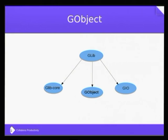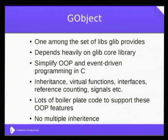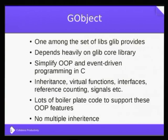GObject provides inheritance, virtual functions, interfaces, reference counting, signals, and all the kinds of stuff that you can imagine a modern programming language providing. The negative side is that you have to use a lot of boilerplate code to support these OOP features. Widgets written using GObject classes have a lot of boilerplate code because you need to support these OOP features somehow. There is also no multiple inheritance possible in GObject — much like Java.